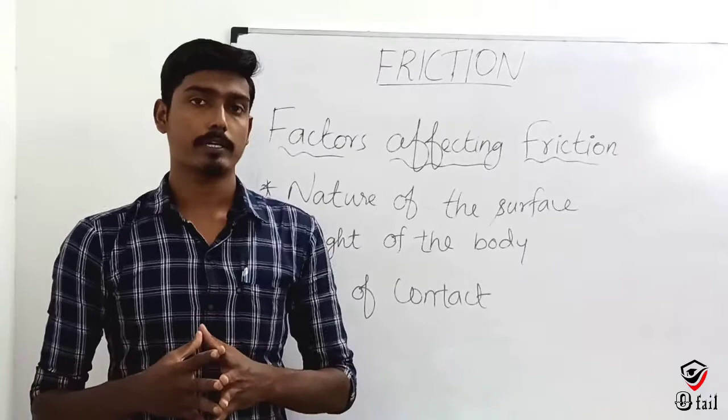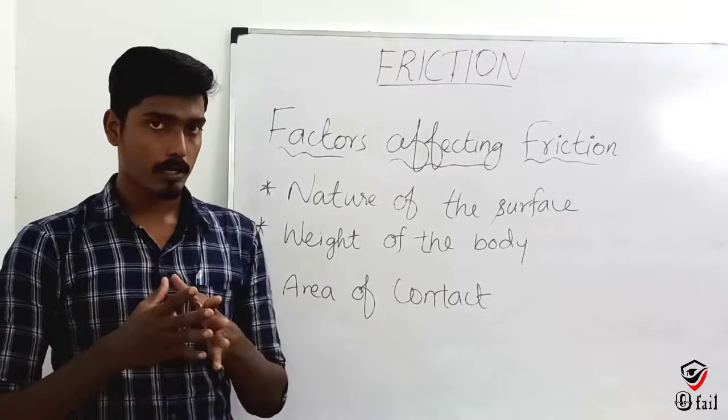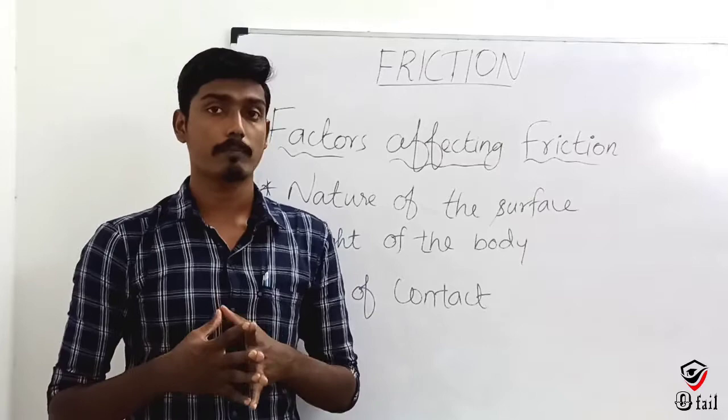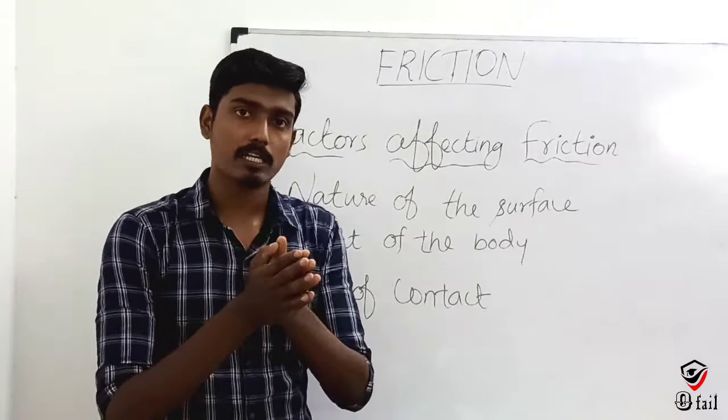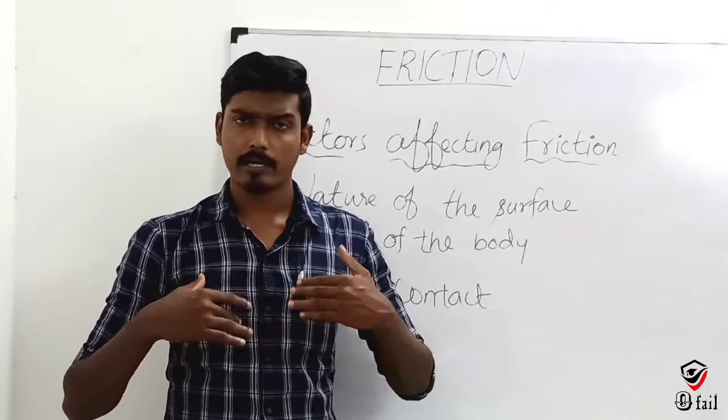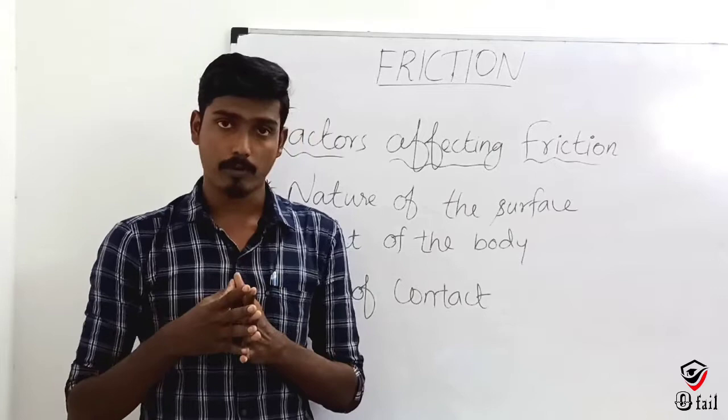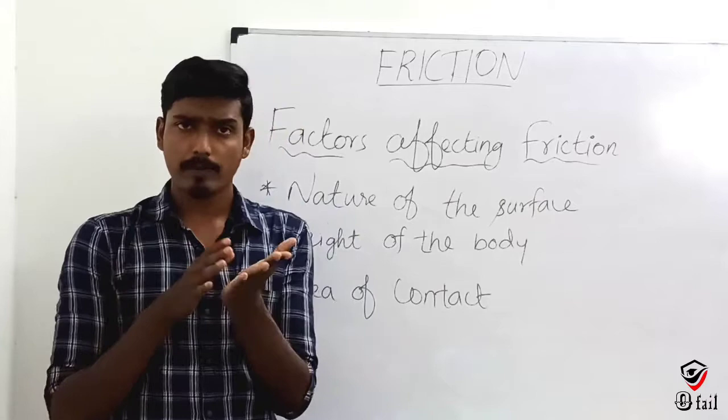Now let's look at the factors affecting friction. Friction varies depending on several factors. The first very important factor is the nature of the surface. The friction changes based on the type of surface — for example, marble, road, and sand surfaces all produce different amounts of friction.